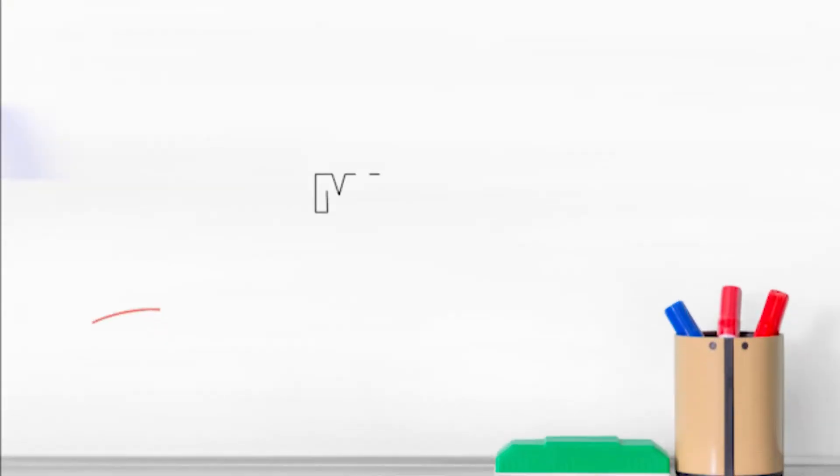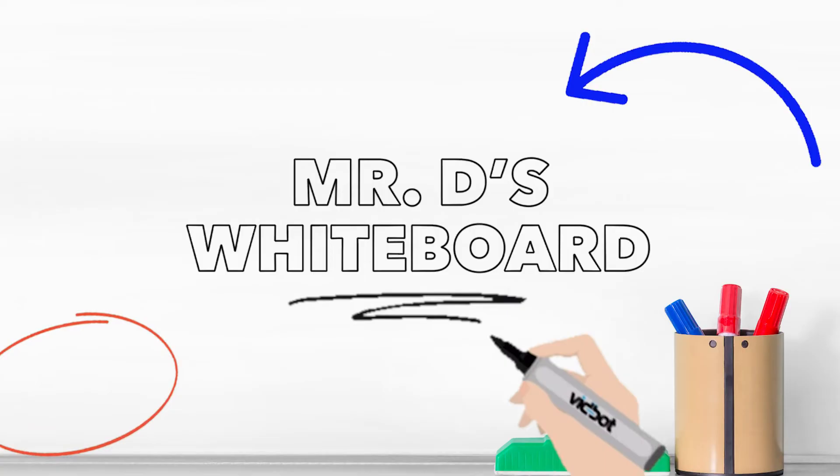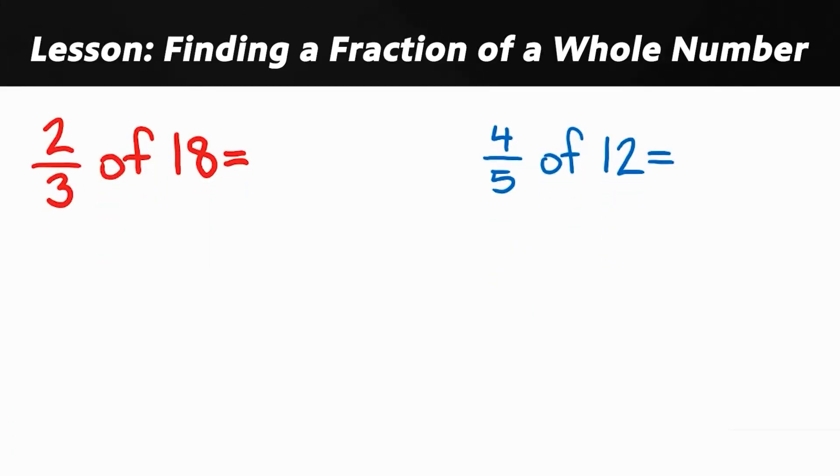Practice time grab your paper and pencil and let's go to the whiteboard. I've got two different problems for you to look at. They're both asking to find a fraction of a whole number. Can you see which one we use the easy strategy with? Is it the red one or the blue one? You can use the easy strategy with the red one. How do we know? Because when I look at the denominators I can see that 3 goes into 18 perfectly but with the blue problem 5 does not go into 12 perfectly. So let's go ahead and solve the red problem.